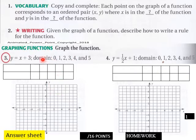And then down here, graph these functions for problems three and four. You got 16 points here for page one. Oh yeah, up here, number two: given the graph of a function, describe how to write a rule for the function. For that writing question, you need an attached answer sheet.